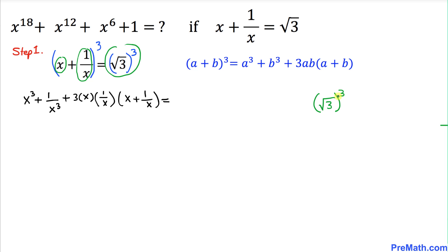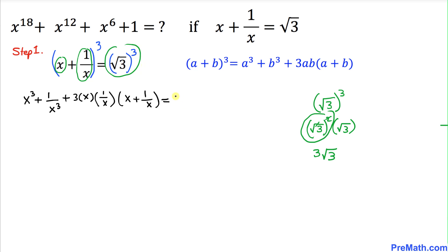Let's simplify and tweak it a little bit. I can write this thing as square root of 3, and this power 3 could be written as power 2 times square root of 3. The square and square root cancel, so we get 3 times square root of 3. So the right hand side can be written as 3 times square root of 3.